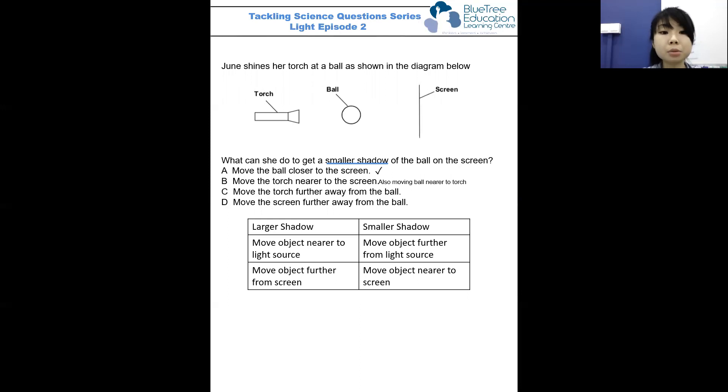If I move the torch further away from the ball, yes, I'm creating a smaller shadow. So this is correct.